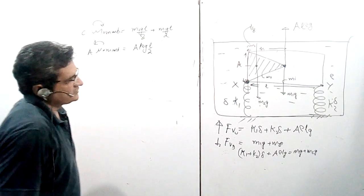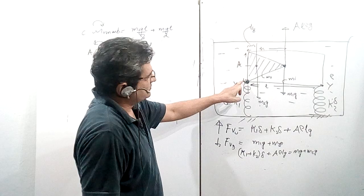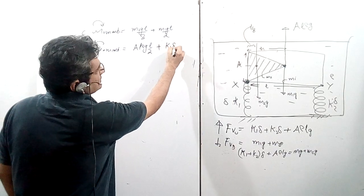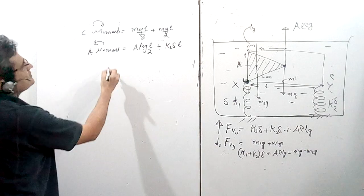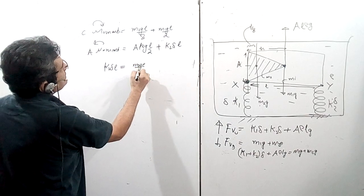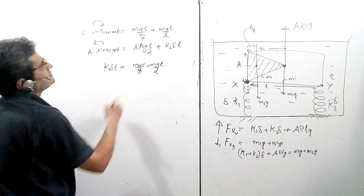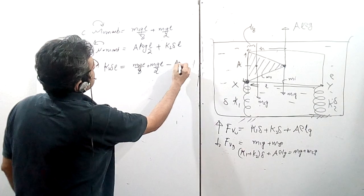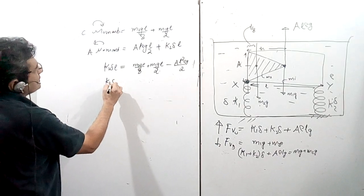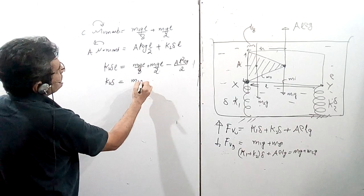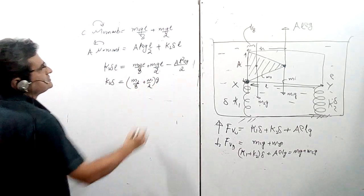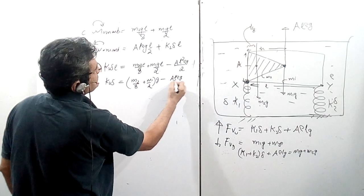The other anticlockwise moment is from spring k2: k2·delta × L. Equating and solving gives: k2·delta = m2·g·(1/8) + m1·g·(1/2) − A·L·rho·g/2, or k2·delta = G·(m2/8 + m1/2) − A·L·rho·G/2.